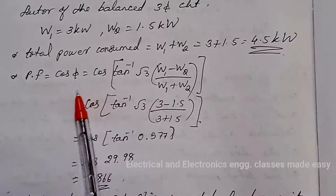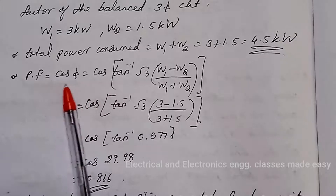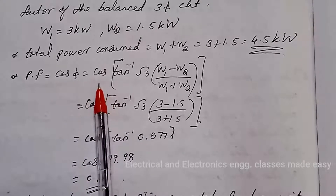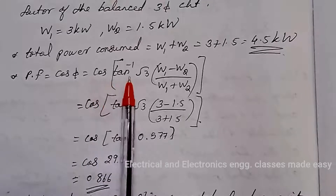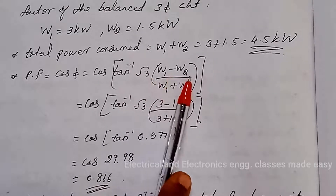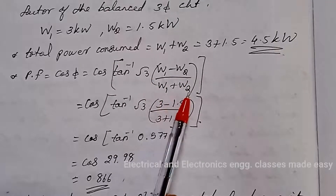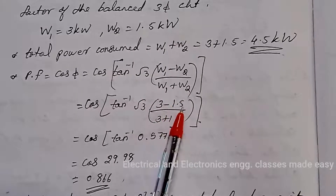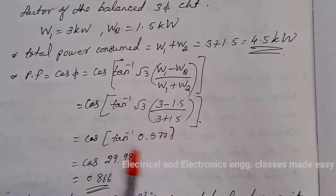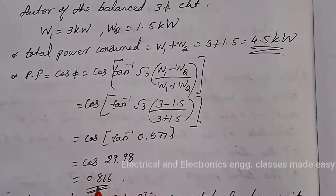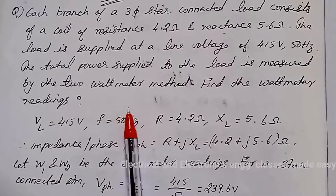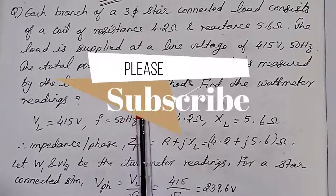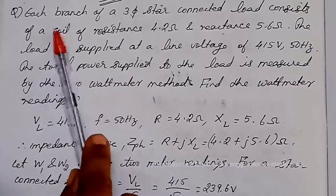Now to find the power factor: power factor = cos φ = cos(tan⁻¹(√3 × (W1 − W2) / (W1 + W2))), where W1 = 3 and W2 = 1.5. After solving this, we get the power factor as 0.866.